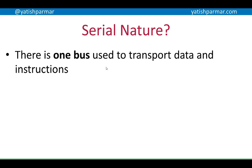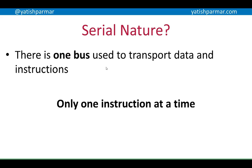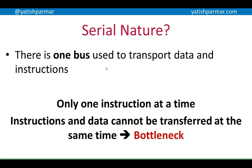The advantage of von Neumann architecture, when you compare it to the way we write programs, is its serial nature — it matches the fetch, decode, execute cycle in that way. However, there was one bus used to transport data and instructions, so therefore you've only got one instruction at a time. That's why we talk about its serial nature, and instructions and data cannot be transferred at the same time.